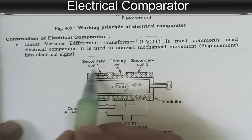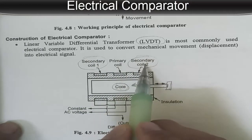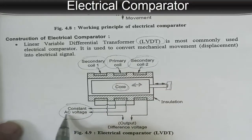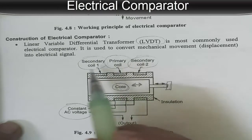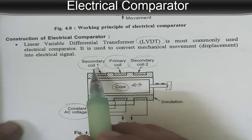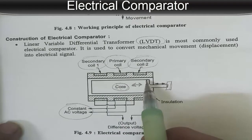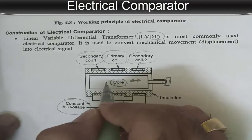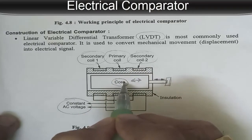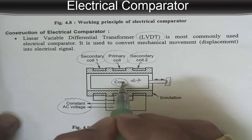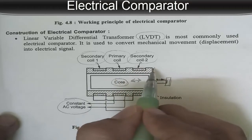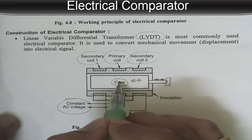Here you can see in this LVDT: secondary coil 1, secondary coil 2, and the primary coil. A constant AC voltage is given to the primary coil. At a particular distance — which will be the same on both sides — are secondary coil 1 and secondary coil 2. When the core is centralized at the middle position, between the two secondary windings, the voltage induced in each secondary coil will be the same.